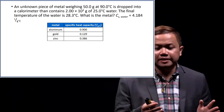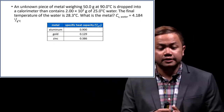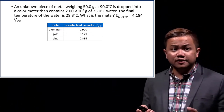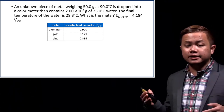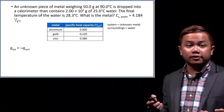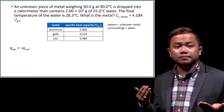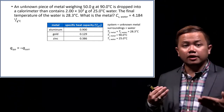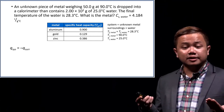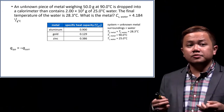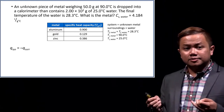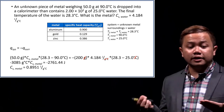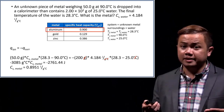Let's look at a problem. An unknown piece of metal weighing 50 grams at 90 degrees centigrade is dropped into a calorimeter containing 200 grams of water. The final temperature of the water is 28.3 degrees centigrade. What is the metal? Our system is the unknown metal and our surroundings is the water. The final temperature of 28.3°C is shared by both once they reach thermal equilibrium. Using Q = m × specific heat capacity × ΔT, we get 0.08951 J/g·°C, which is close to aluminum. The unknown metal is aluminum.